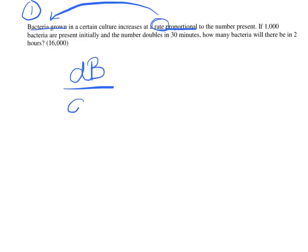I need the rate of bacteria, or dB/dt. B for bacteria, the rate of bacteria. Is proportional to means equals k. Remember, k is that constant of proportionality. And what am I proportional to? It says the number present. The number of bacteria present.